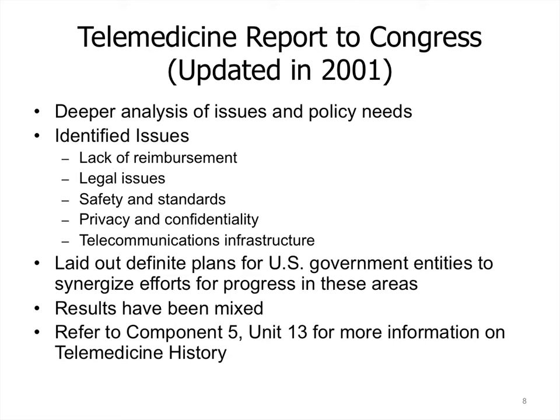Through the undaunted efforts of telemedicine advocates, the telemedicine report to Congress was updated in 2001 under a new governance that included many telemedicine organizations and practitioners. This resulted in a deeper analysis and focus on policy needs from a governmental level. The 2001 report identified five key focus areas for policy development: lack of reimbursement, legal issues, safety and related standards, patient privacy and confidentiality, and telecommunications infrastructure. The report made concrete recommendations and developed action plans for specific governmental agencies for improving these policy issues.